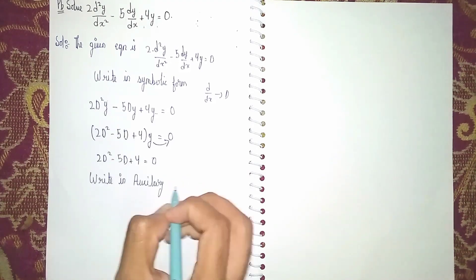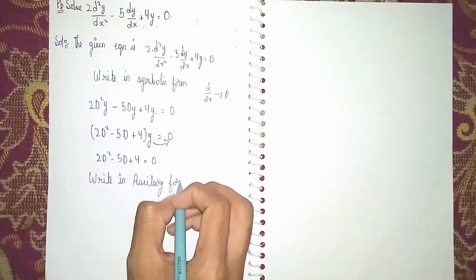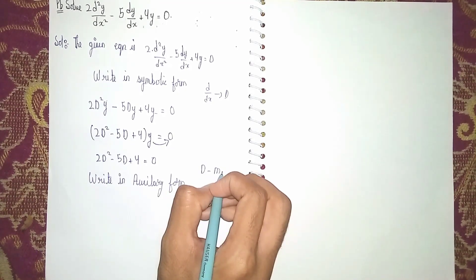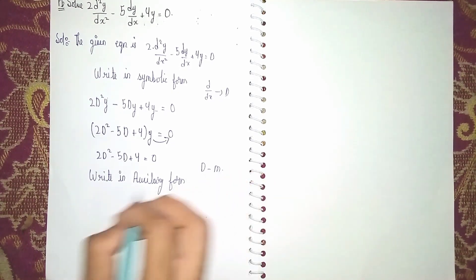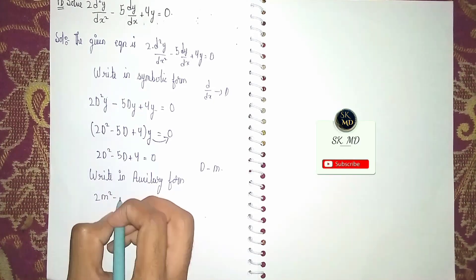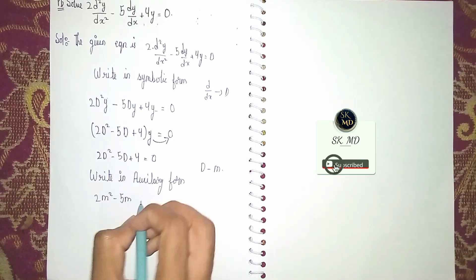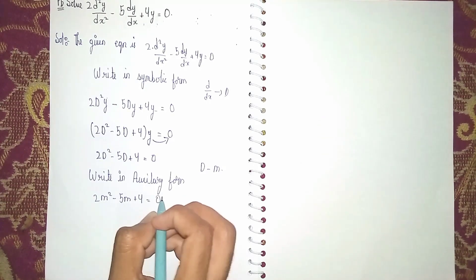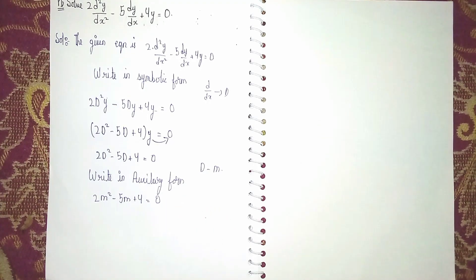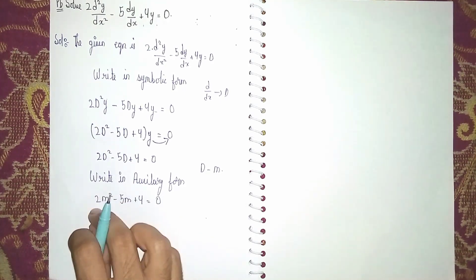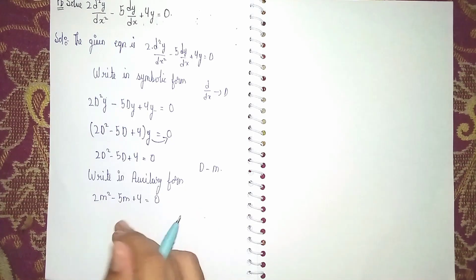Write in auxiliary form — instead of D I put m, to find the roots. So 2m squared minus 5m plus 4 is equal to 0. We can't find the factors by middle term splitting because 4 times 2 is 8, and in 8 we can't find the middle term.